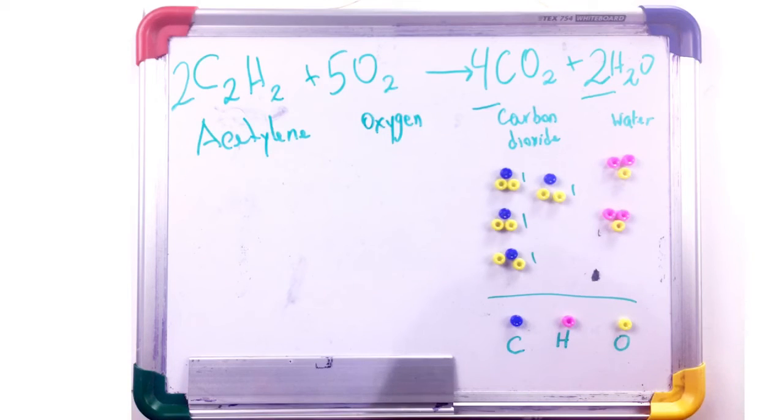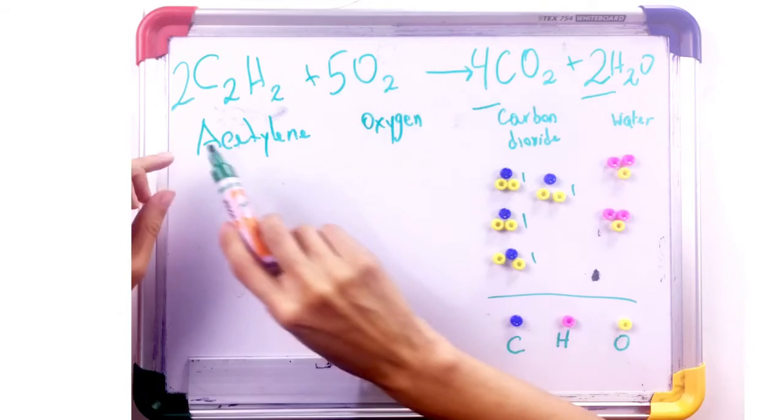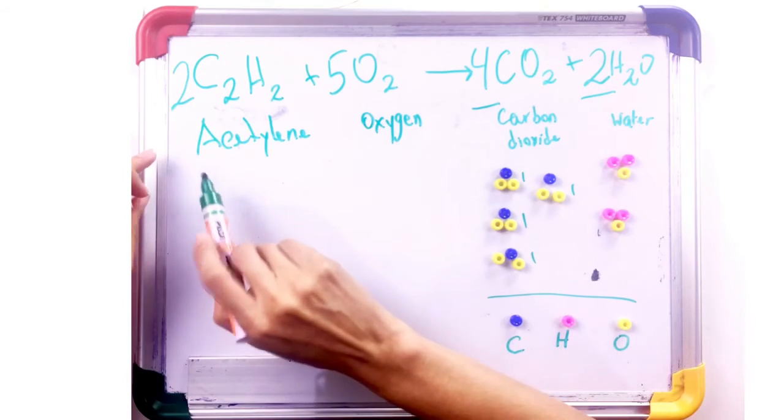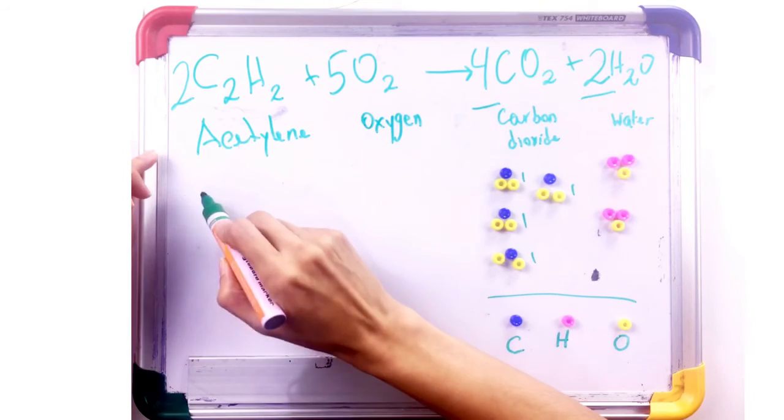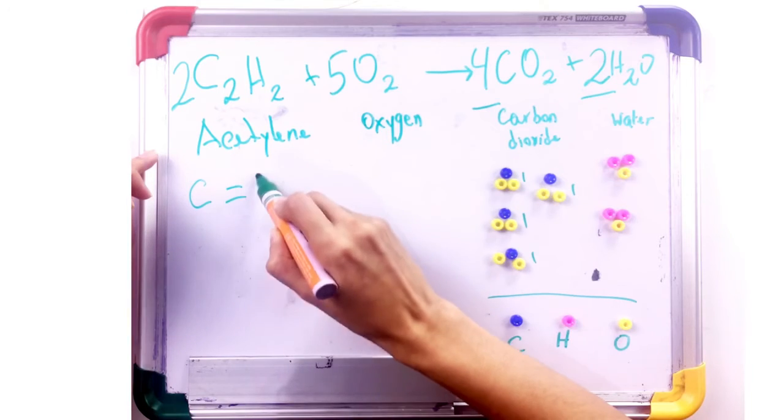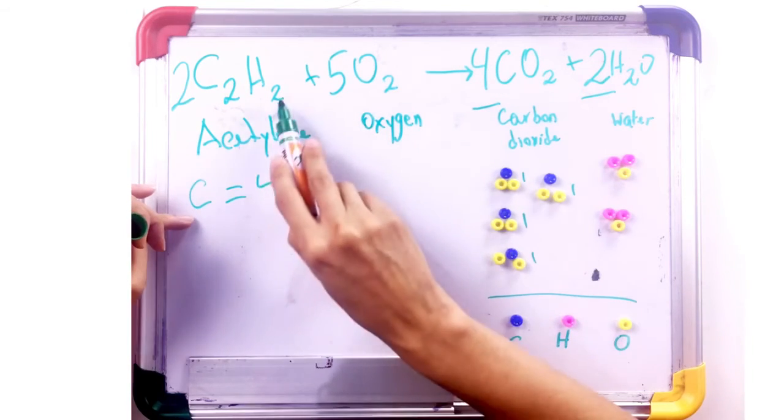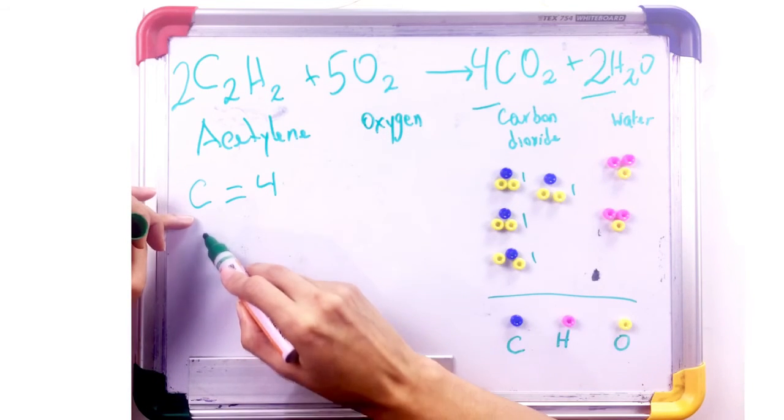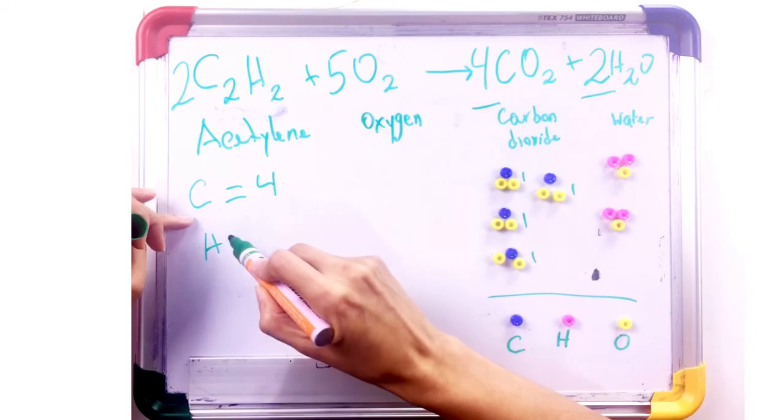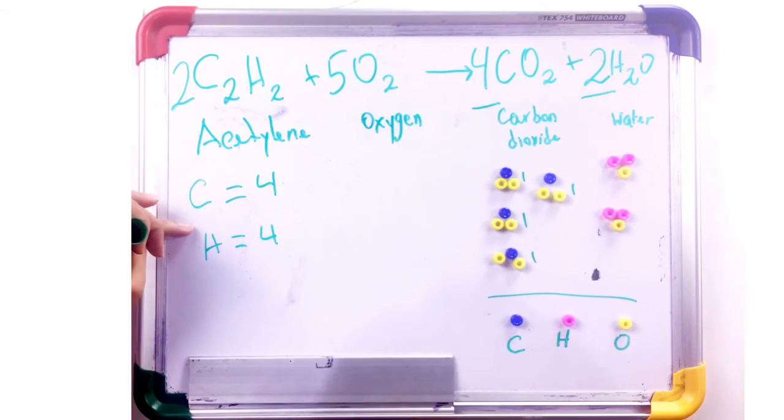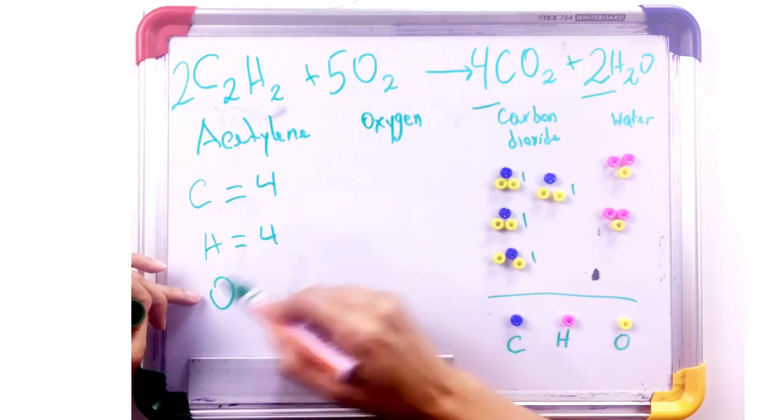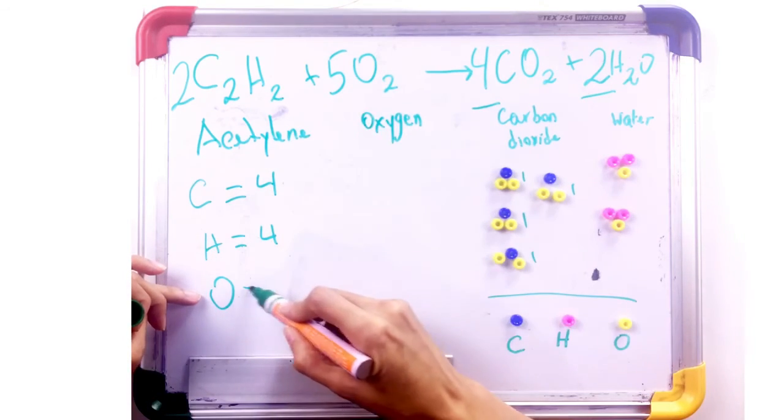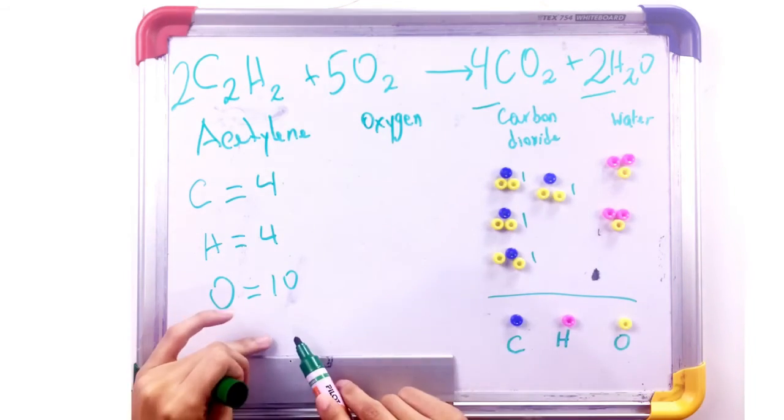If you can prove it, we're able to see that on the reactant side we have two times two, we have four carbon. Hydrogen, we have two times two, that's four hydrogen. Oxygen, we have five times two, that's 10 oxygen atoms.